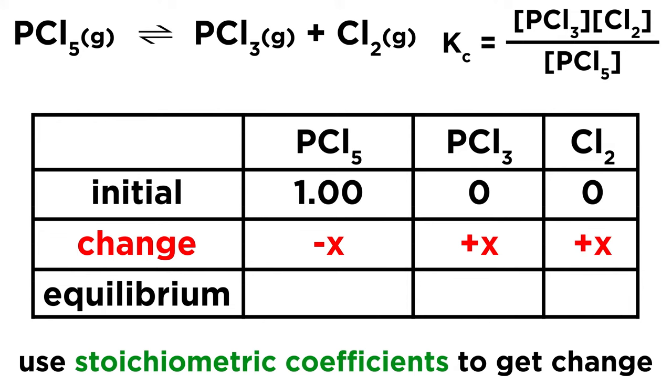We are going to lose X from PCl5 and gain X for the two products. If the coefficients were not all 1, let's say one of the products had a coefficient of 2, then we would have plus 2X instead. But here they are all 1, so we just have minus X and then plus X and plus X.